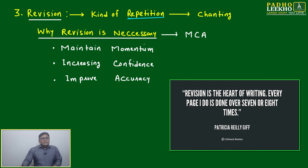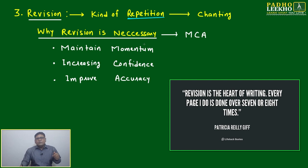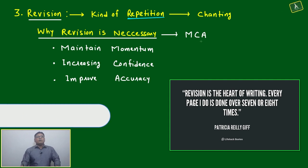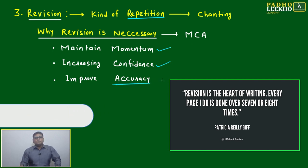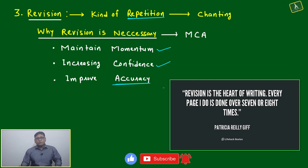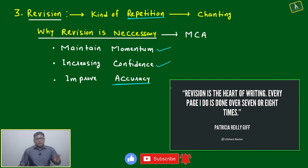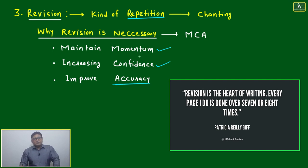We have to do revision in a different way to maintain interest and increase creativity — then it will be more helpful. Revision is important because revision will give you momentum, momentum will give you confidence, and based on these two your accuracy level will improve. You have to improve accuracy and reduce time. Once you are doing revision in a better way, your momentum will improve, your confidence will go up, and your accuracy level will improve.